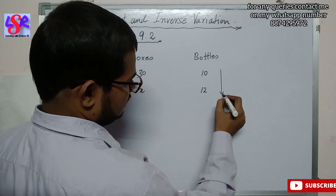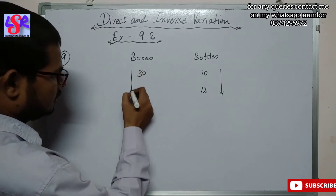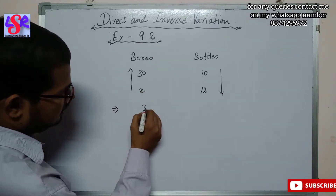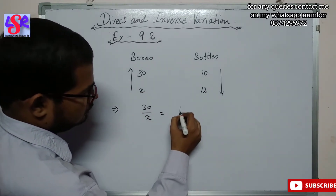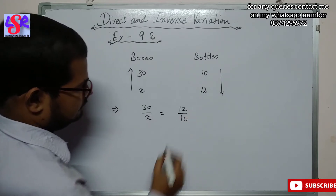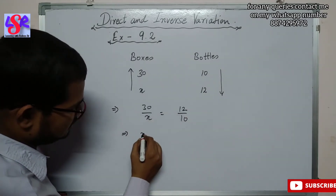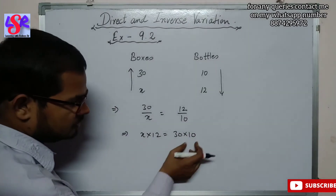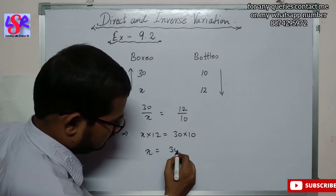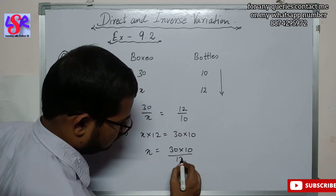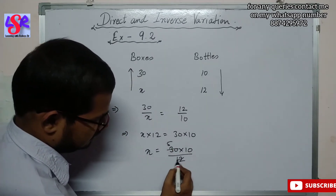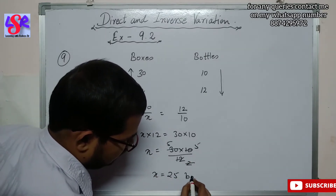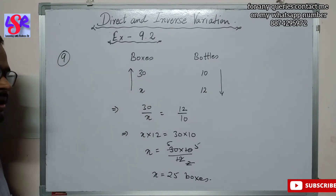We put the arrow in the downward direction because 12 is greater than 10, so the boxes arrow points in the opposite direction. The equation is: 30 / x = 12 / 10. Cross-multiplying: 12x = 30 × 10. So x = (30 × 10) / 12 = 25. Therefore 25 boxes are required to pack 12 bottles in each box.